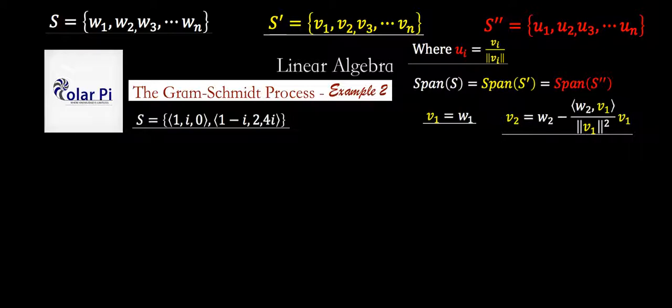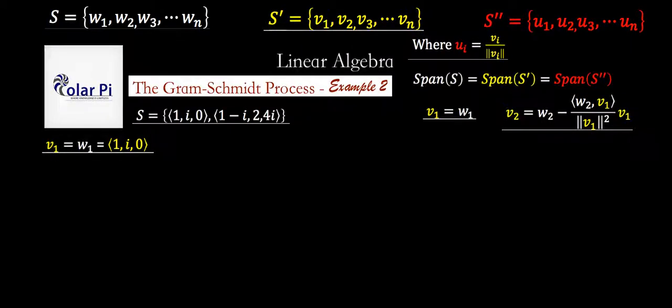So we start with S here and do what? Well, we know that V1 is W1, so there's no work there. But to find V2, we know we have to use this here. But then that means we have to work with this inner product between W2 and V1, and so we should talk about that inner product between two vectors with complex entries.